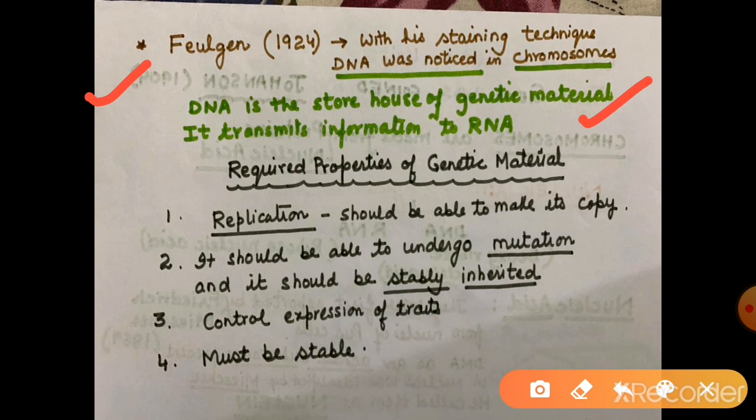First, genetic material can replicate — replicate means that copies can be made. When the cell divides, DNA replicates, forming sister chromatids. So the first property of genetic material is that it can replicate. Second, it should be able to undergo mutation — mutation means there will be genetic changes that can be inherited, providing varieties and variations which is a very important tool for evolution. Third, genetic material should be stable.